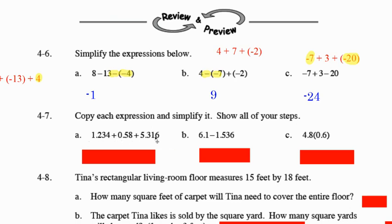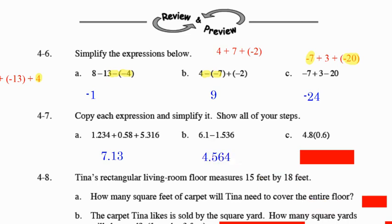Here I want to see your work and your steps. I should see that you lined up the decimal point and added. Here I should see that you added two extra nonessential zeros and showed your borrowing or regrouping. And here I should see that you multiplied and then moved in two decimal places for your answer. You should know how to add, subtract decimals, and multiply decimals and show the work.